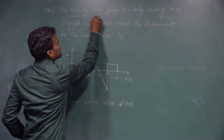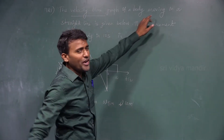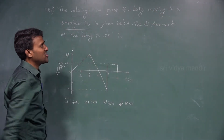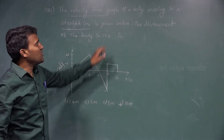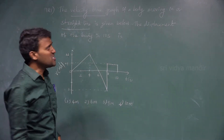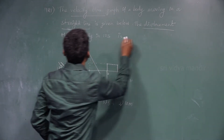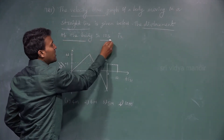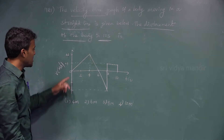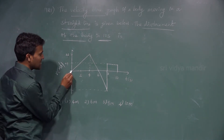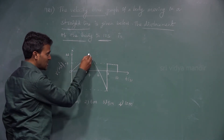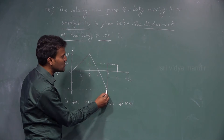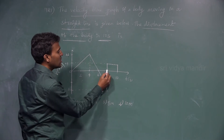The velocity-time graph of a body moving in a straight line is given below. We have to calculate the displacement of the body in 10 seconds. The graph is increasing, then decreasing, going into the negative side, and then coming back into the positive side.